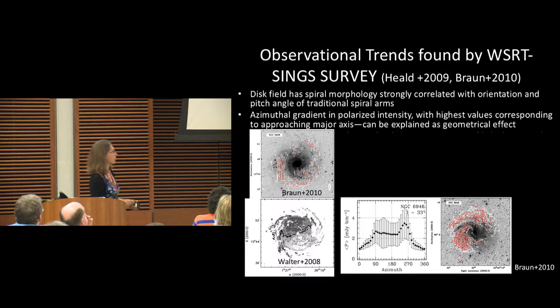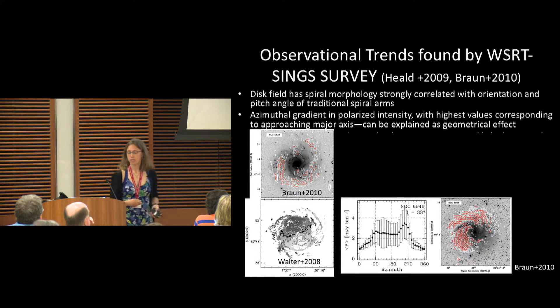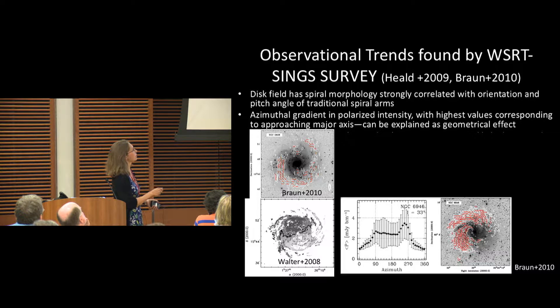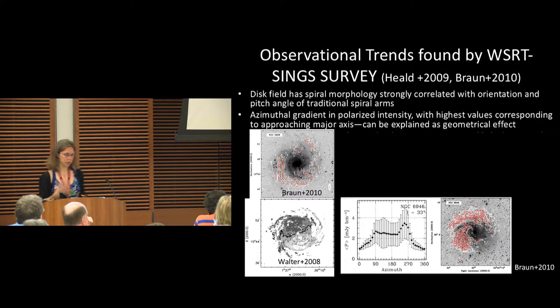Additionally, they found that this polarization peaks with the approaching major axis of the galaxy. Here this lighter color is positive, darker is negative, and you can see that the polarization strength is stronger with the approaching side.